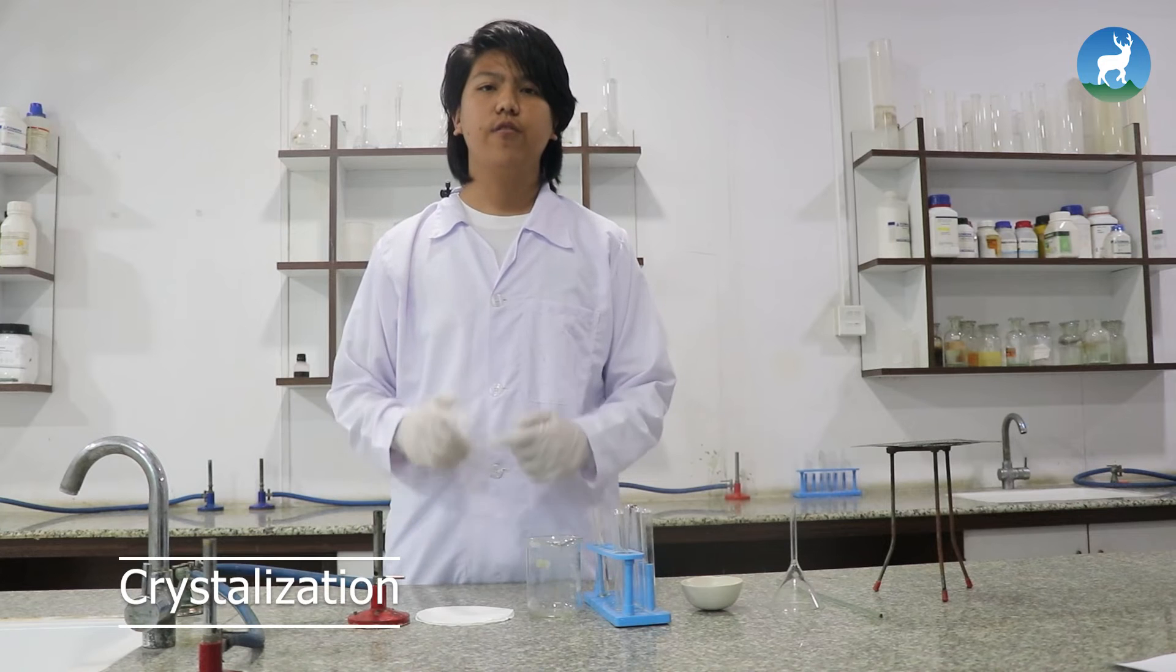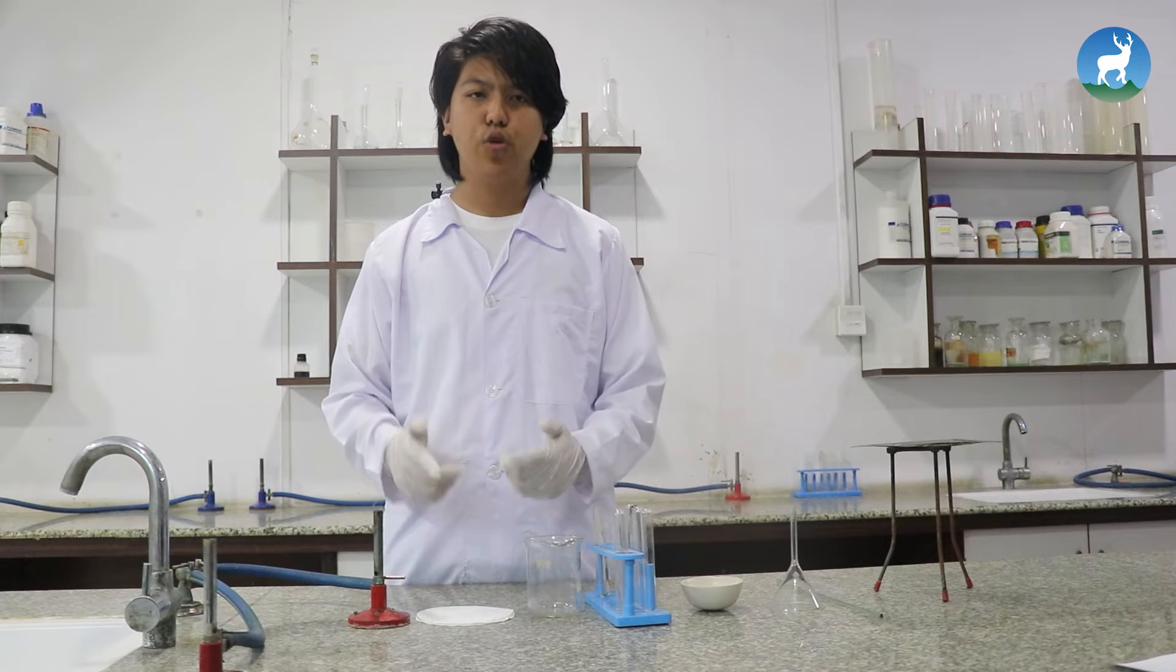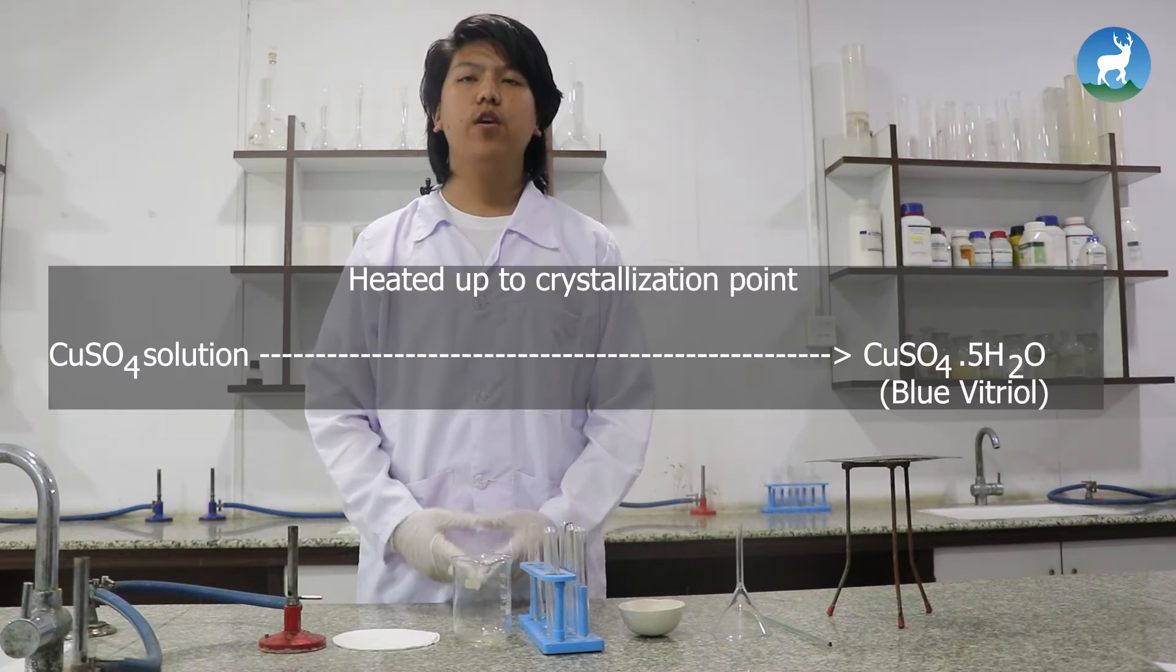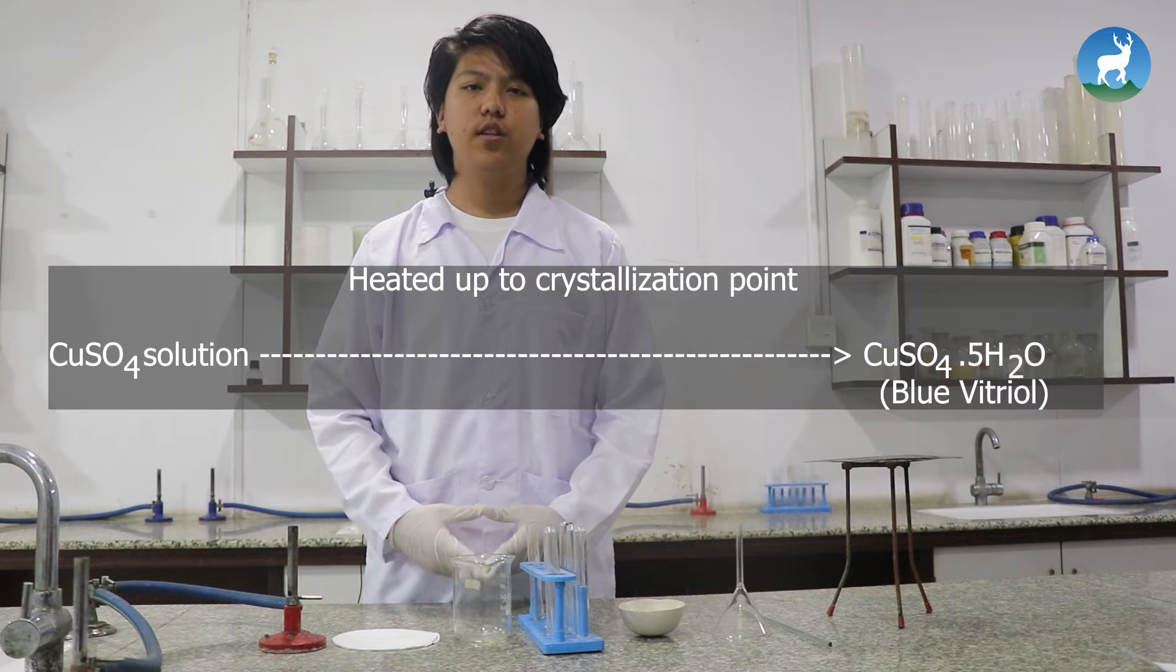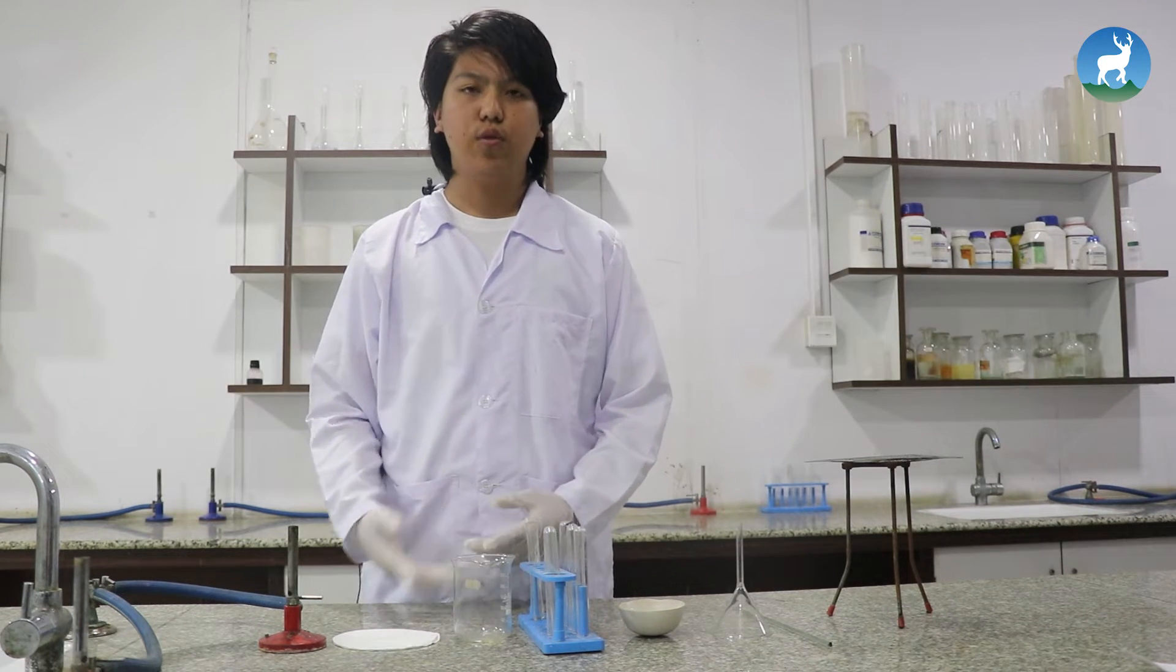Crystallization is the process of formation of crystals by evaporating each solution to its crystallization point. The crystallization point is where fine crystals are formed when a solution saturated at high temperature is cooled down to room temperature. If copper sulfate solution is heated up to its crystallization point, then we will get crystals of copper sulfate, also known as blue vitriol.